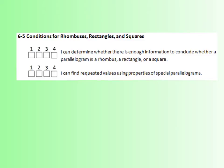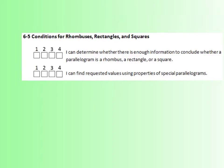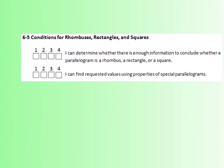We have two learning objectives. The first one is that we can determine whether there's enough information to conclude whether a parallelogram is a rhombus, rectangle, or square. And then we're also going to find requested values using those special properties.